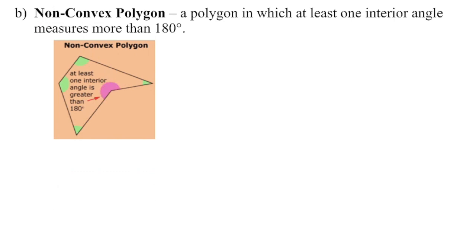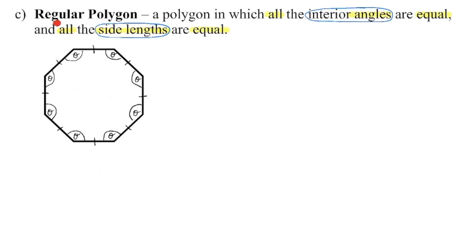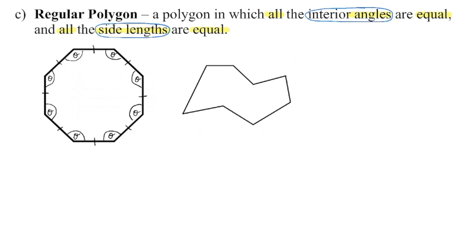It kind of looks like one side has been pushed in toward the center. When we have a regular polygon — something like a stop sign or an octagon — each side length and each angle measure is equal. This other octagon is an eight-sided figure, but it's clearly not a regular octagon because those sides and angles are not equal.